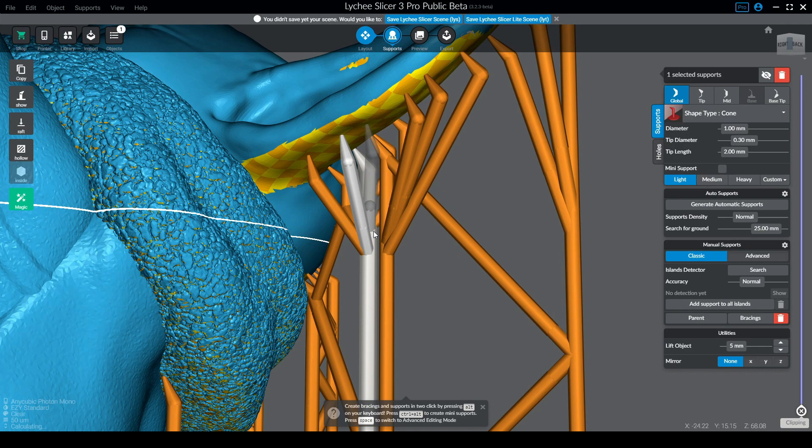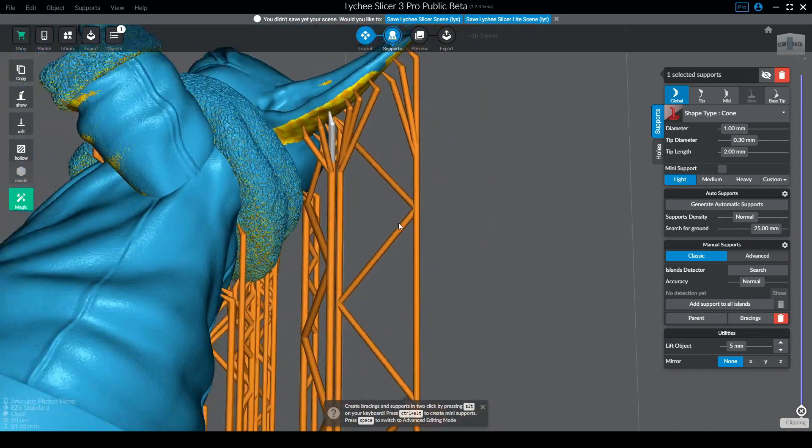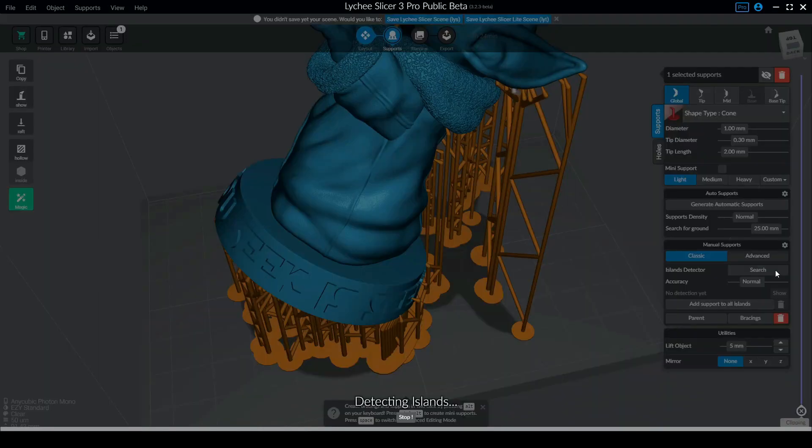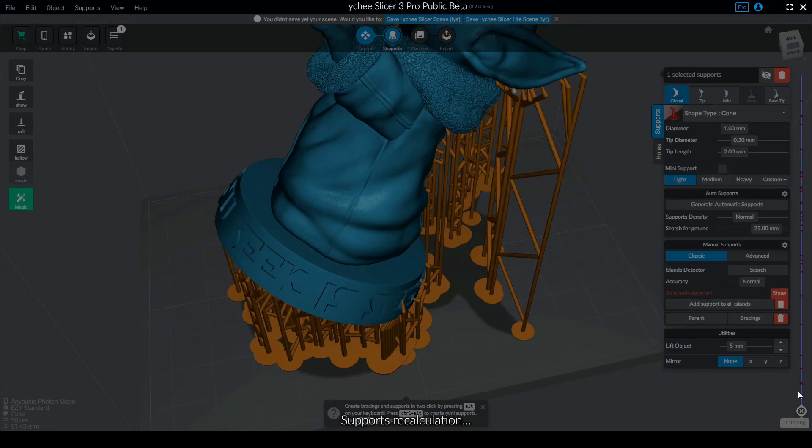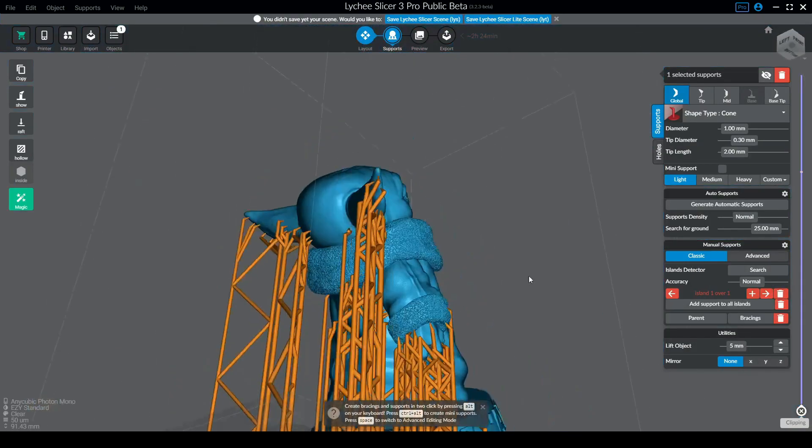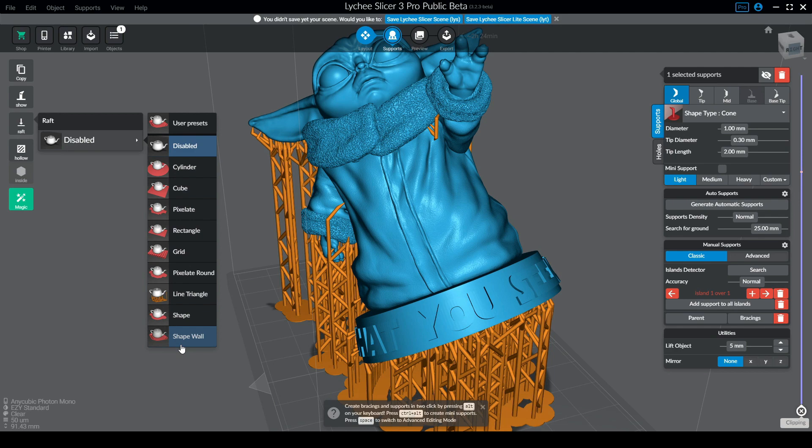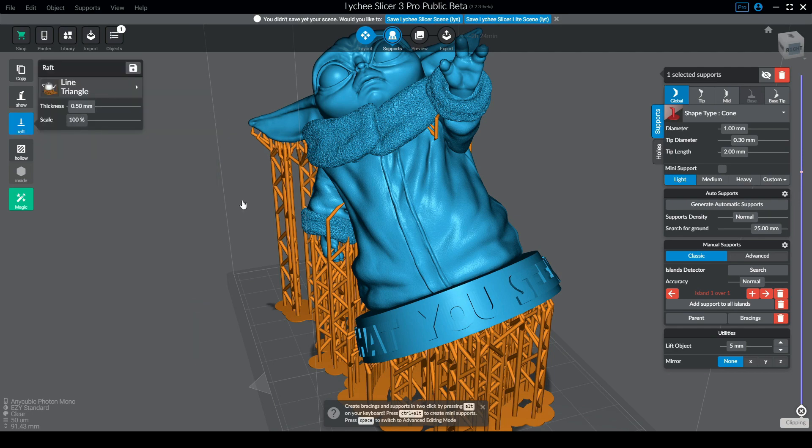This is how I do on Lychee. Lychee also has an interesting feature of island detector, so as you can see, I'm searching for islands, and I'm placing supports on those islands automatically. I will show also the process on ChituBox next.